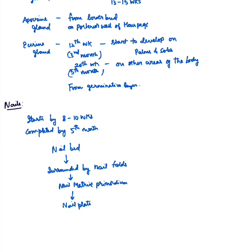Nail development starts by the 8th to 10th week of embryonic life and is completed by the fifth month. It begins as a flat rectangular surface on the dorsal digital tips, which is demarcated by nail folds — the first structures to keratinize. The proximal border of the nail fold extends deep into the dermis to form the nail matrix primordium, which contains nail stem cells that form the nail plate. The nail plate emerges from under the proximal nail fold by the fourth month, covers the entire nail bed by the fifth month, and the process is complete. Toenails develop by a similar process but are four weeks behind fingernails.